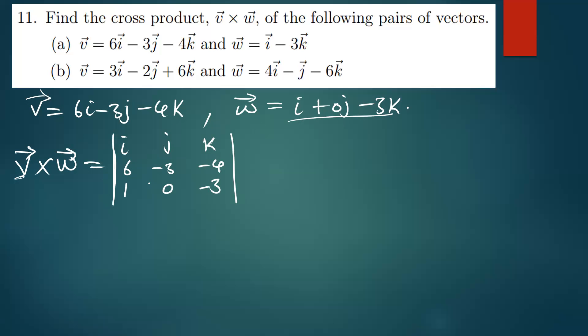Finding the determinant of this matrix gives us the cross product. The cross product of two vectors gives you a vector, and the magnitude of that resulting vector is simply the area of a parallelogram. When you divide that resulting magnitude by two, you get the area of a triangle.